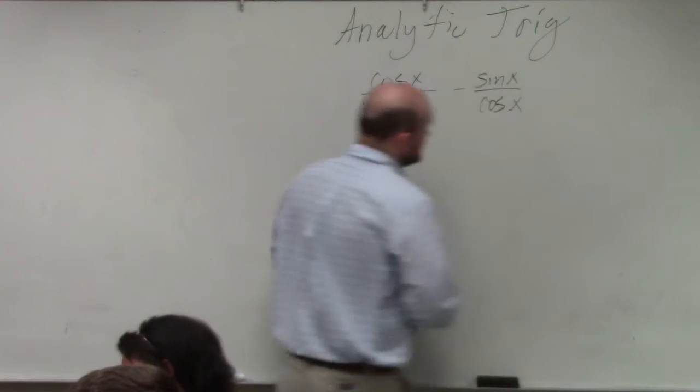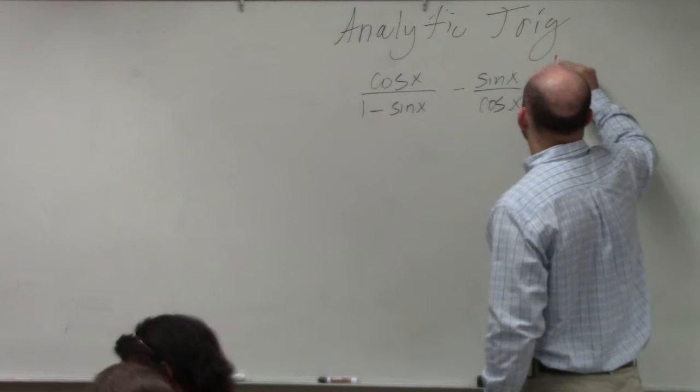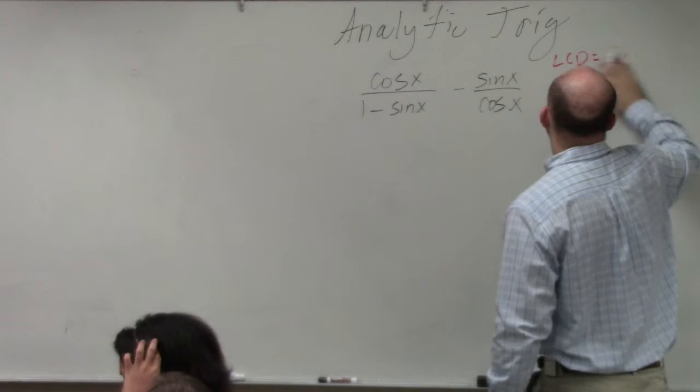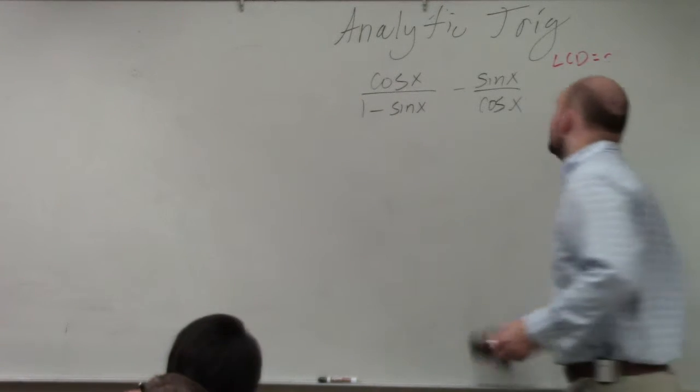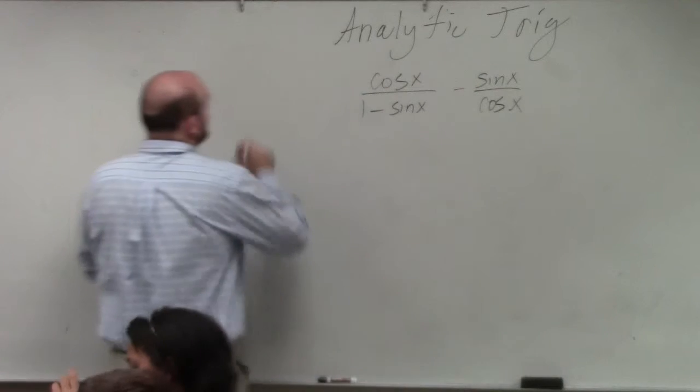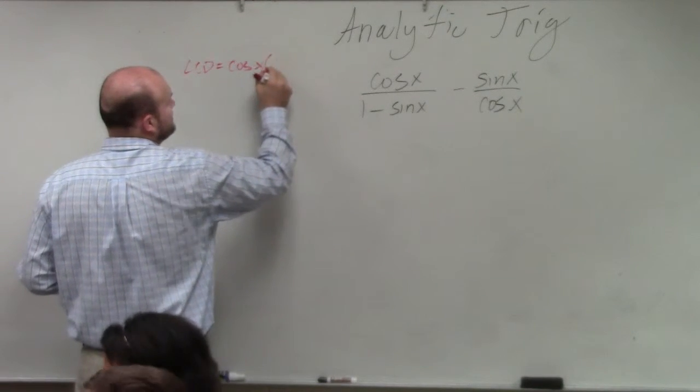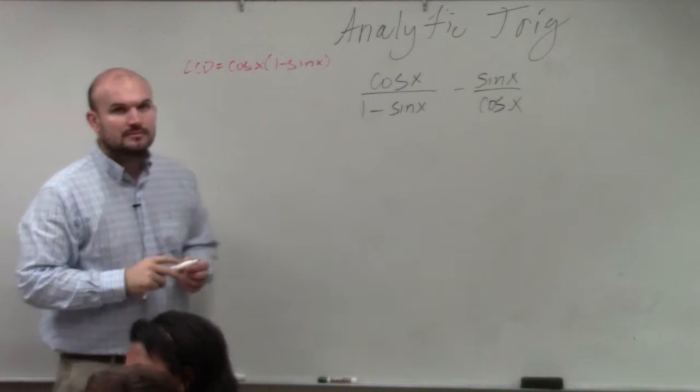So the LCD, in this case, is cosine of x times 1 minus sine of x. Does everybody agree?